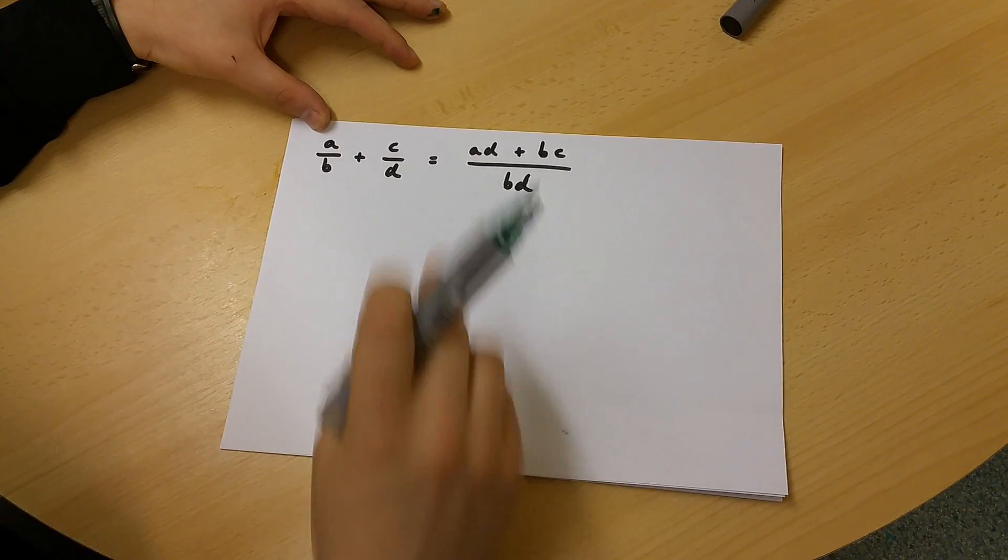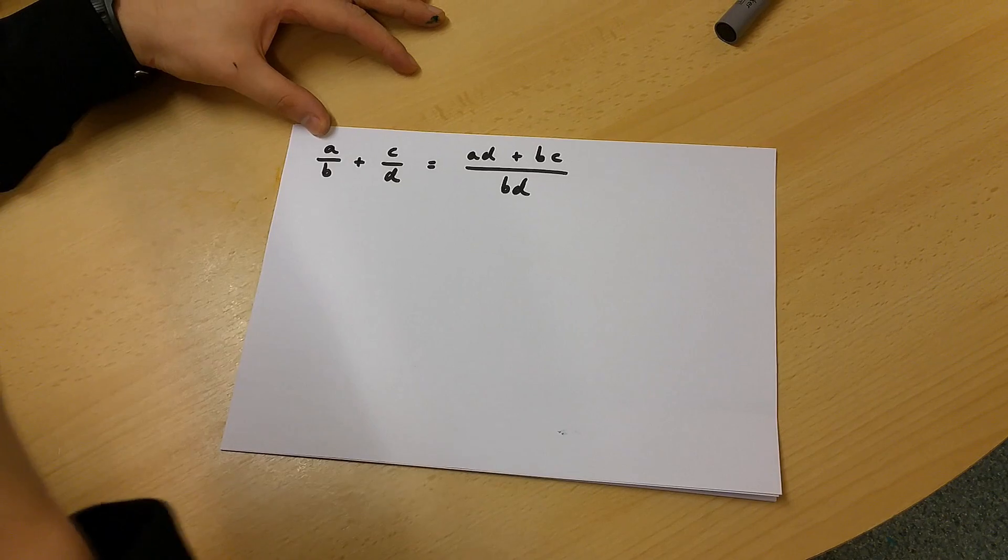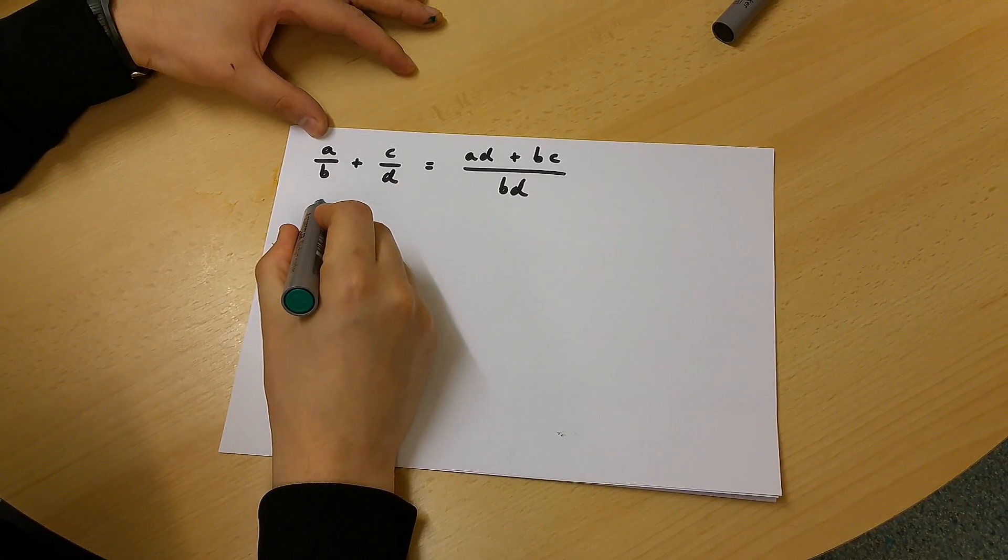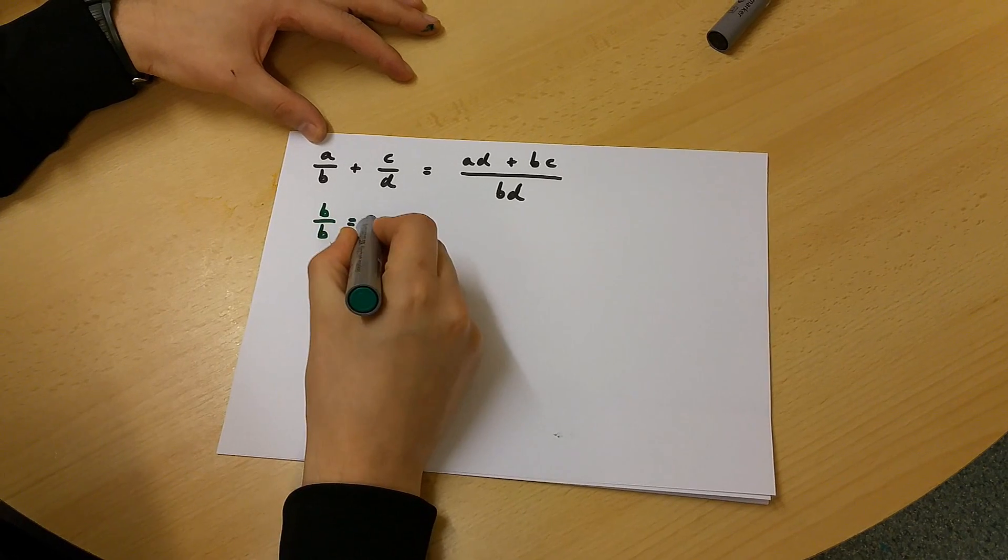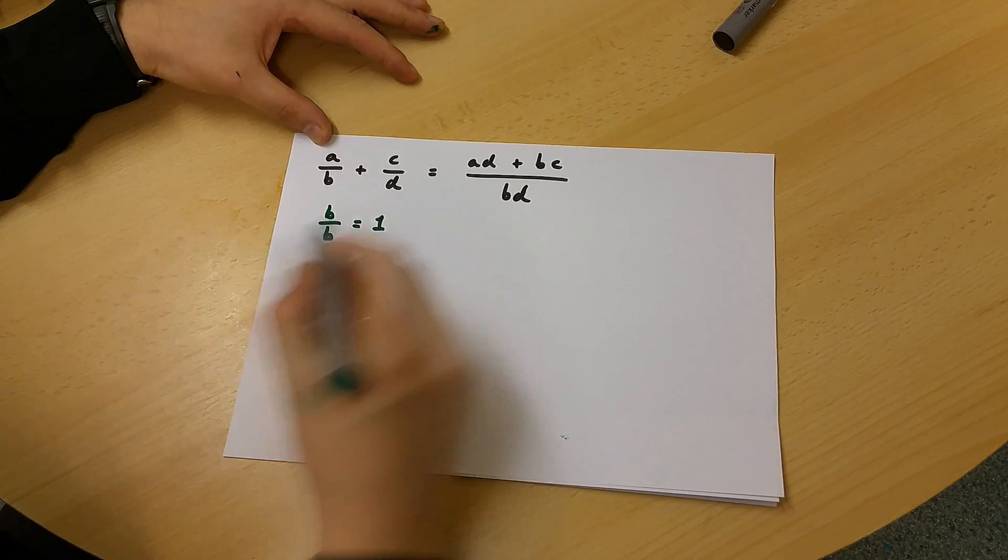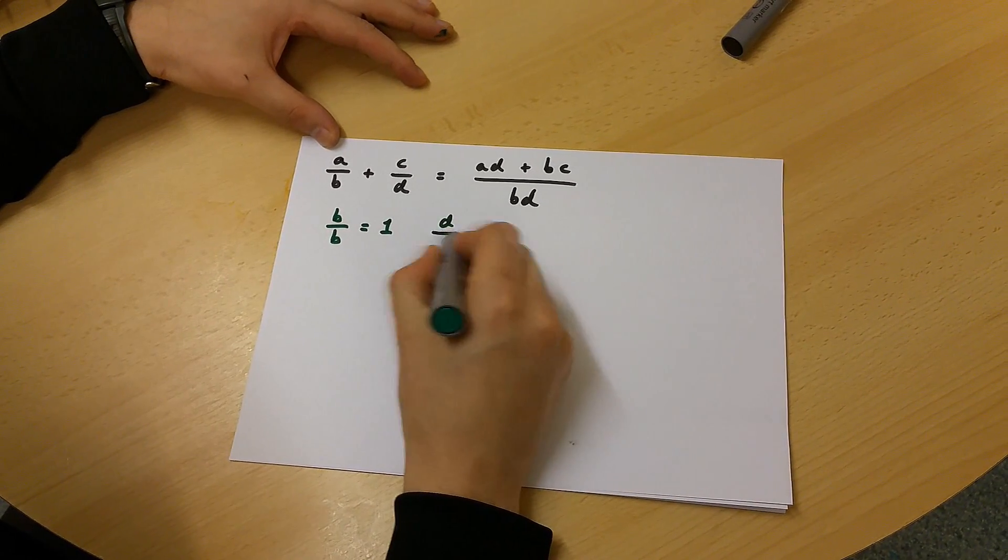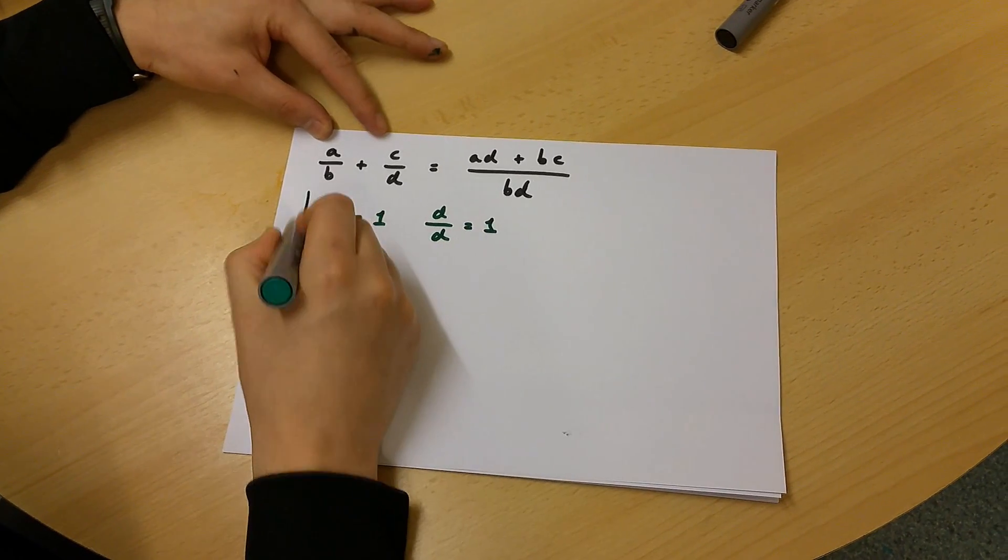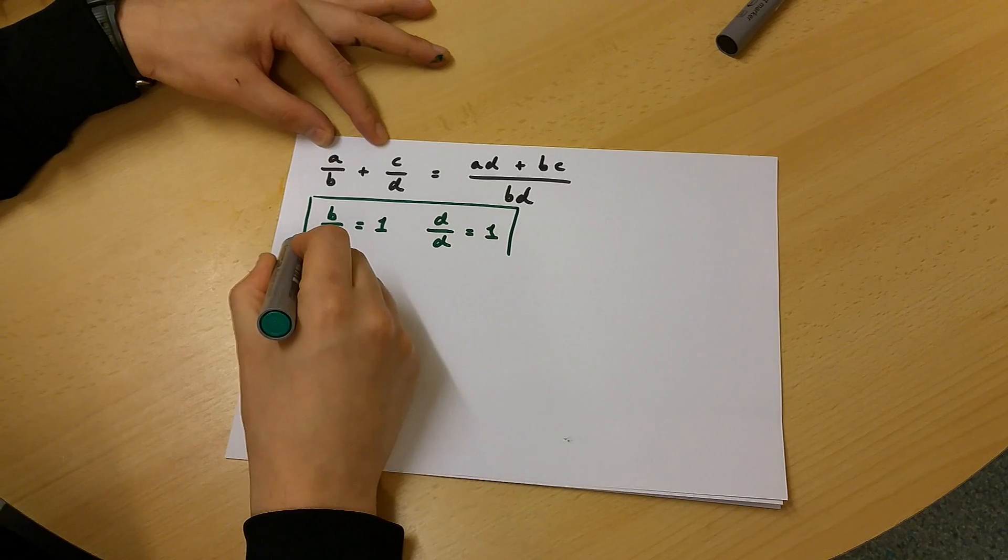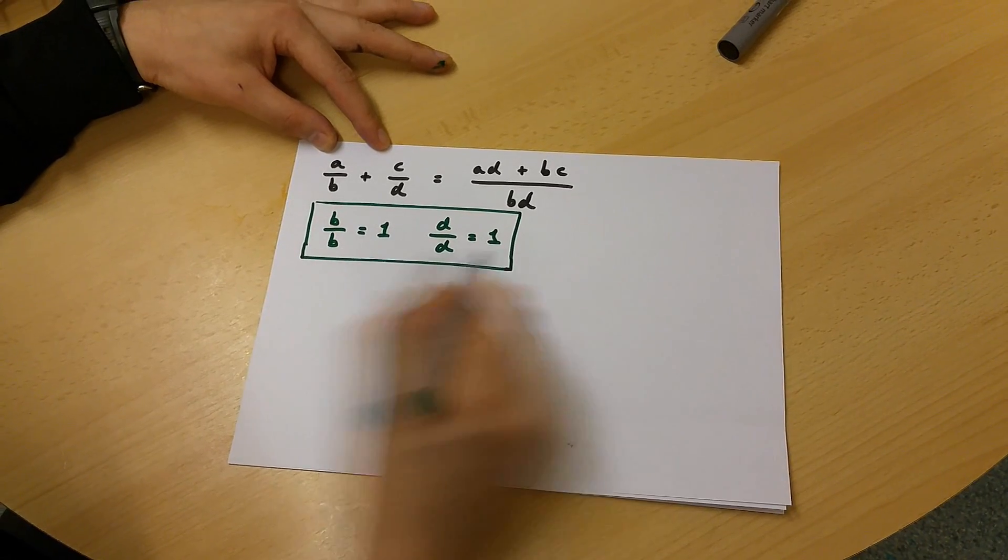Now before I do this, there are two things you should know. One is that B/B is equal to 1 and that D/D is also equal to 1. Right? You must know this rule over here.